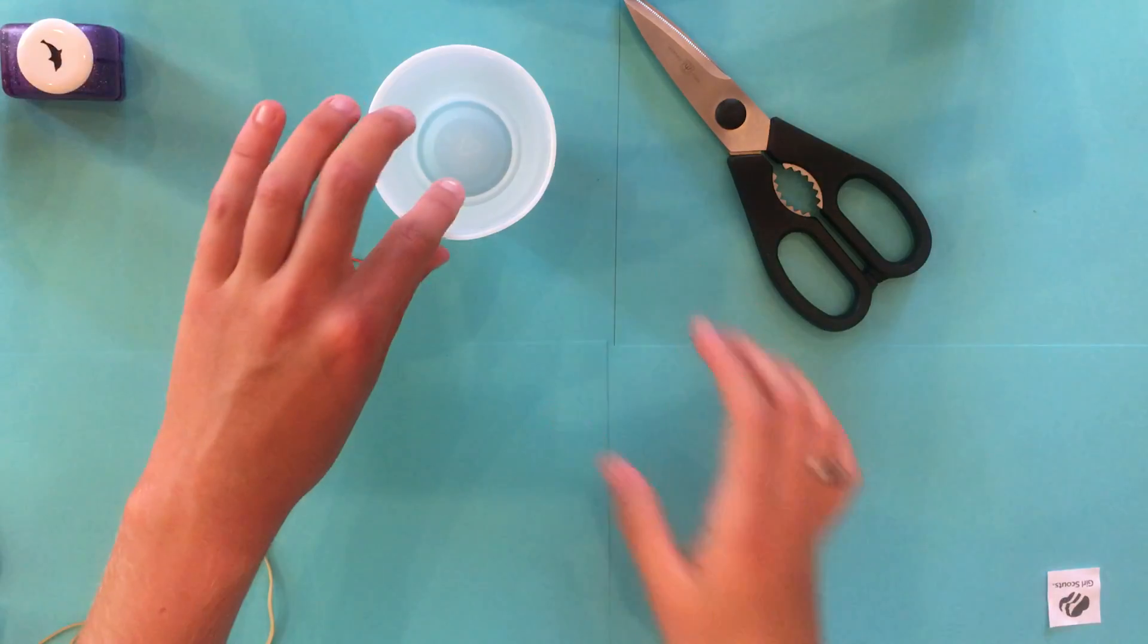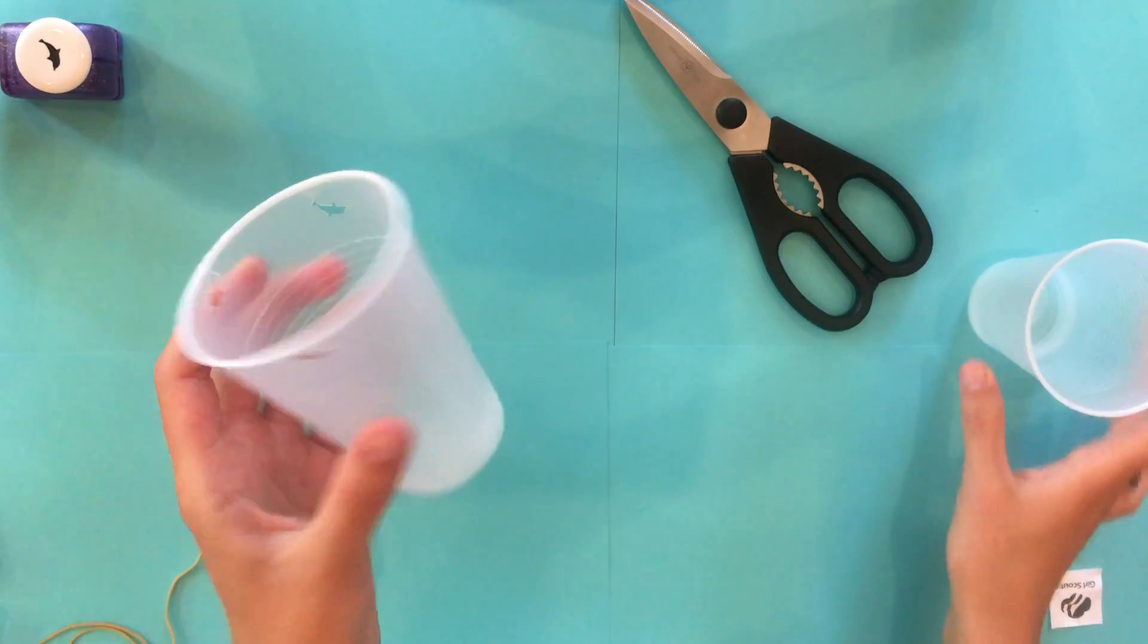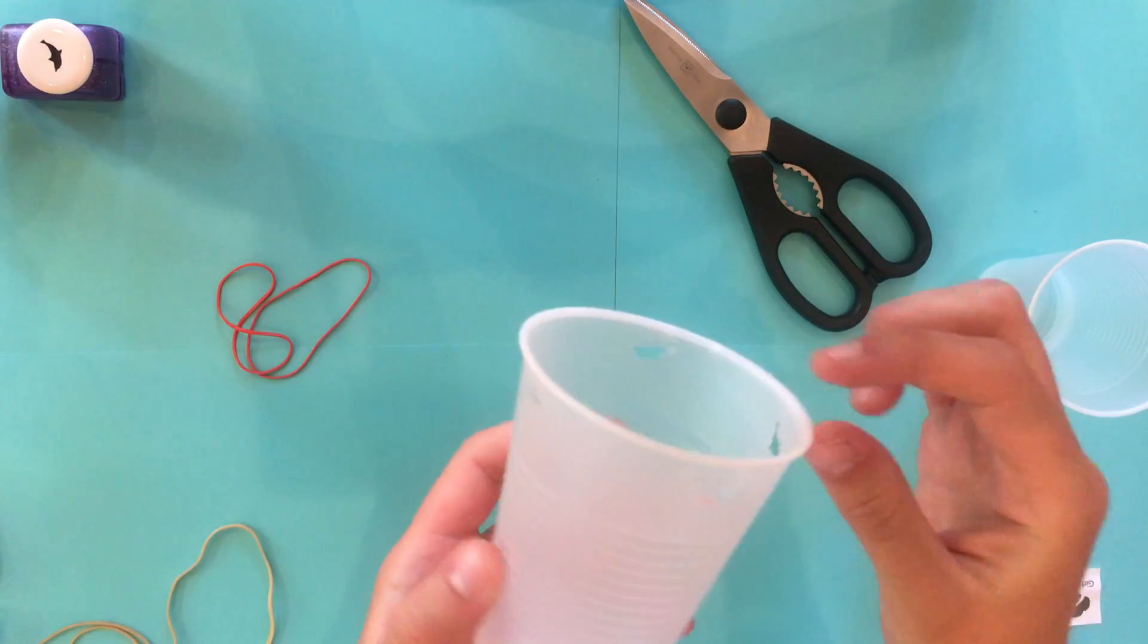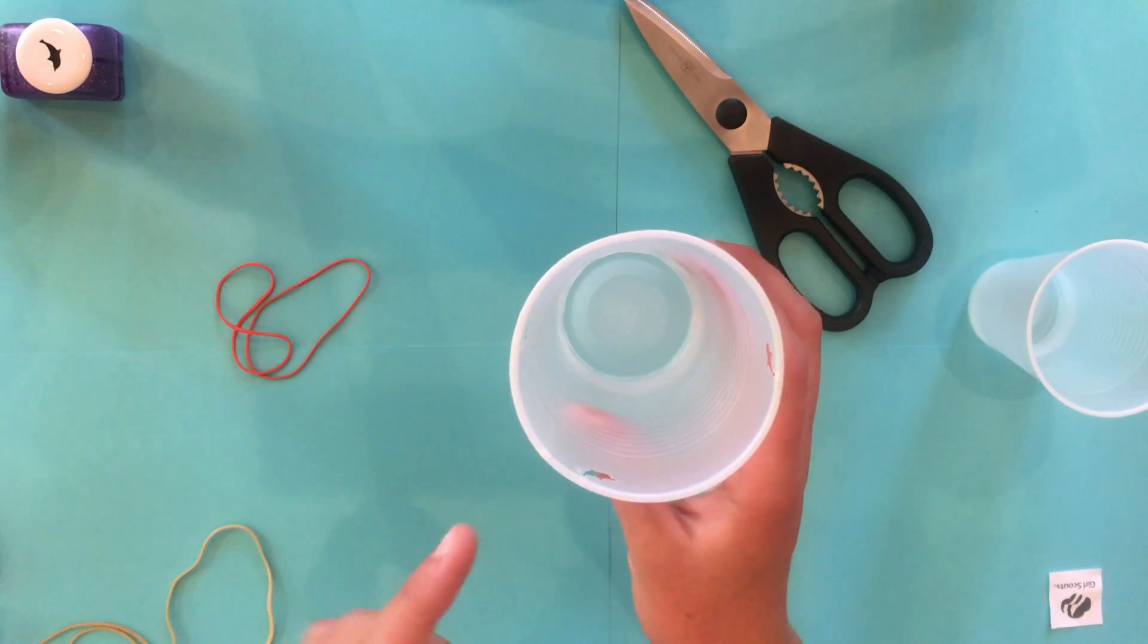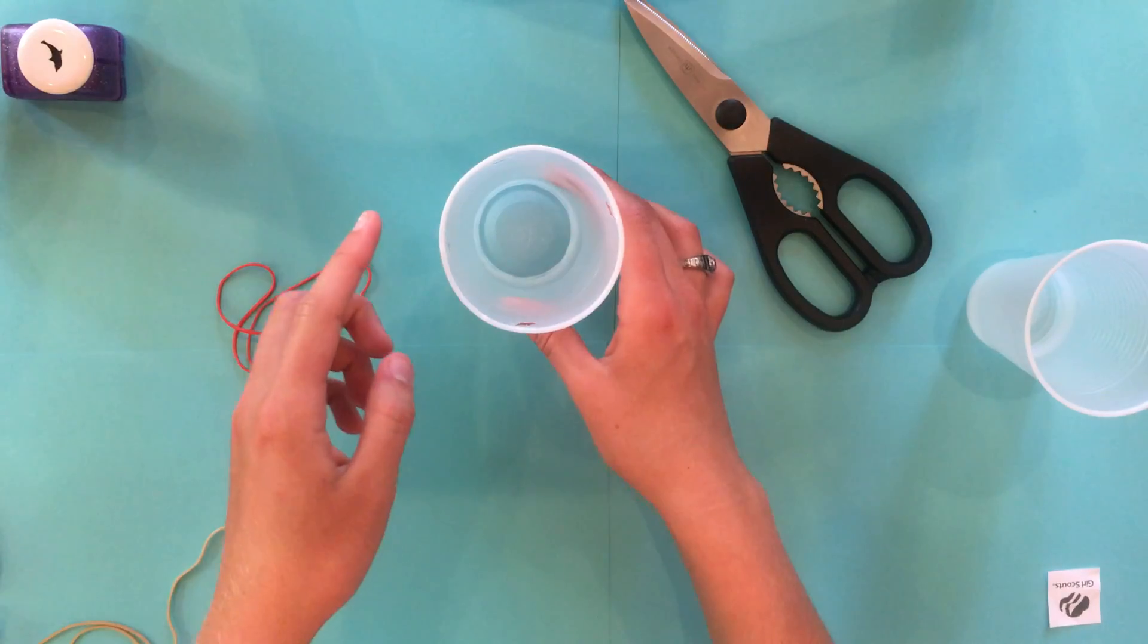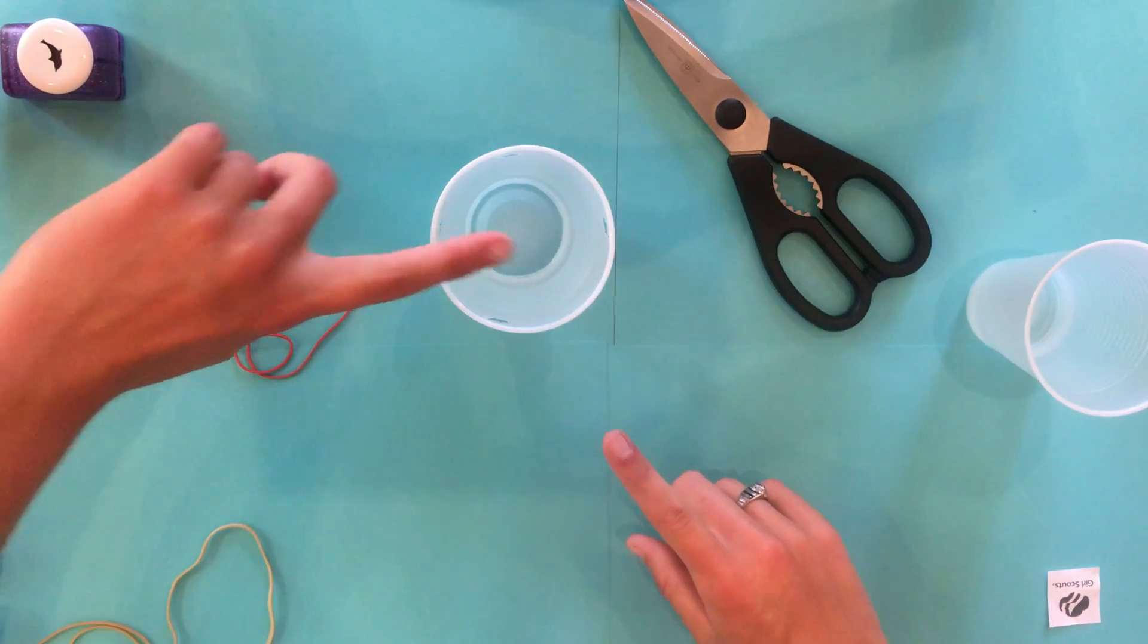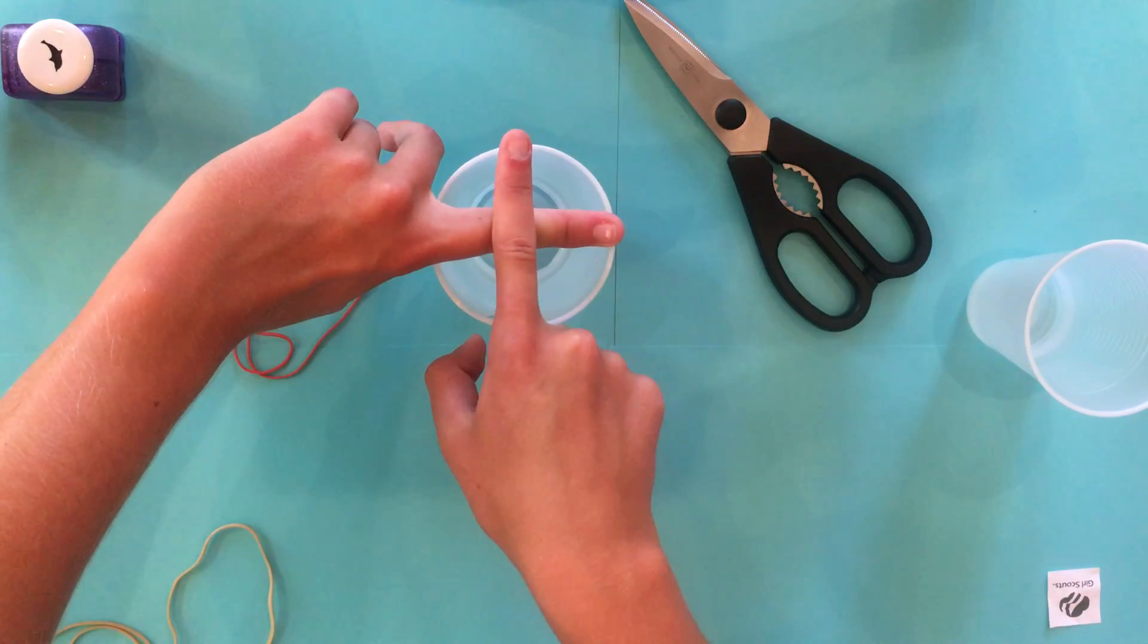The first thing you have to do is punch holes in one of the cups. I've already done that for time reasons—yes, they're little dolphins, my mom's a scrapbooker. You need four holes to make a perpendicular line. It should make a cross, so you have one here and one here and one here and one here, like a plus sign.